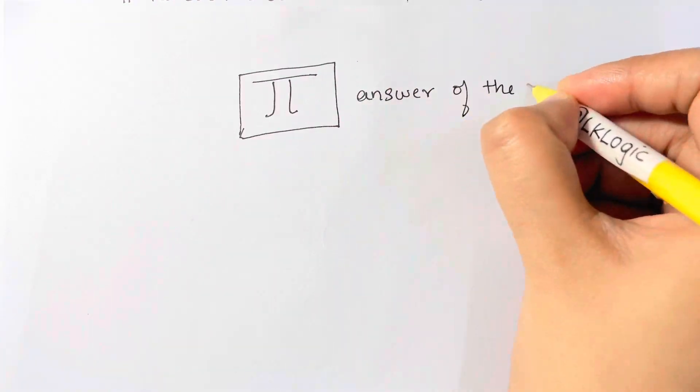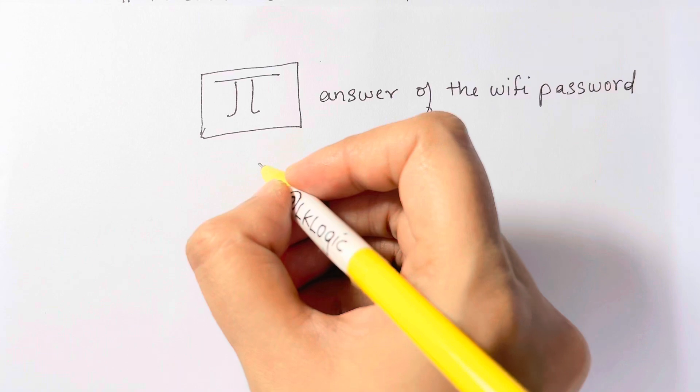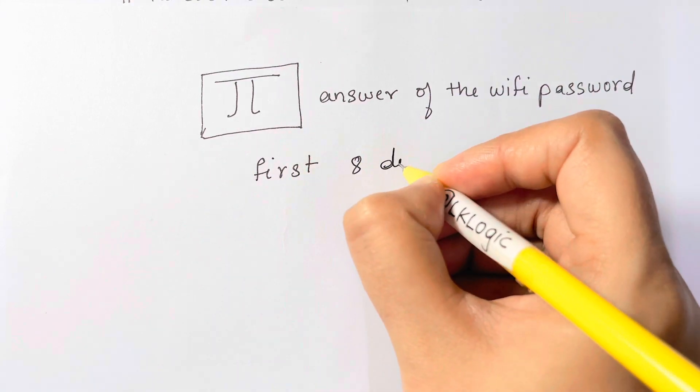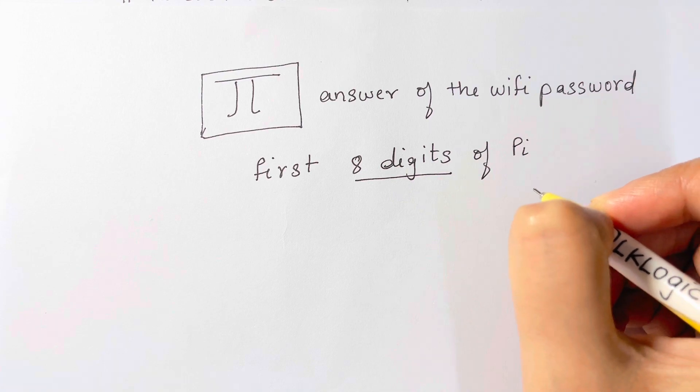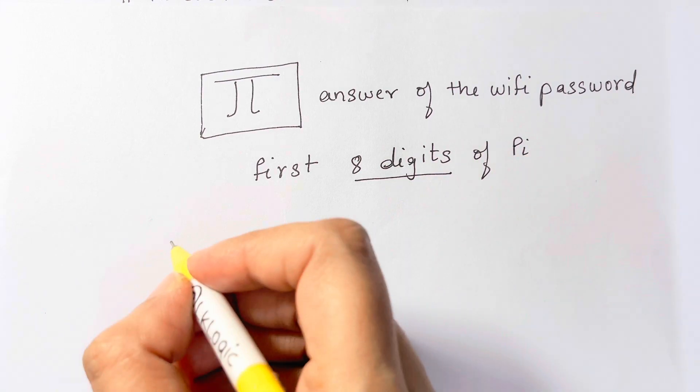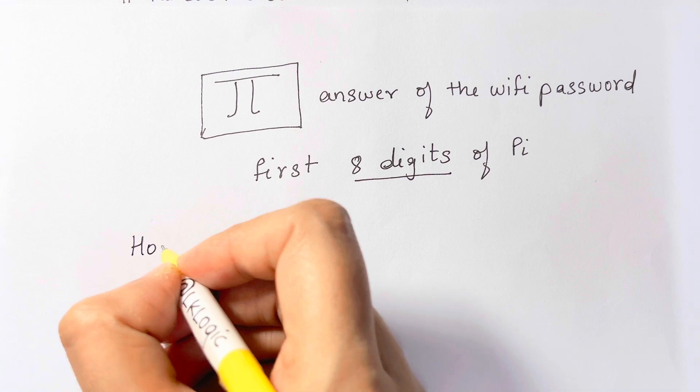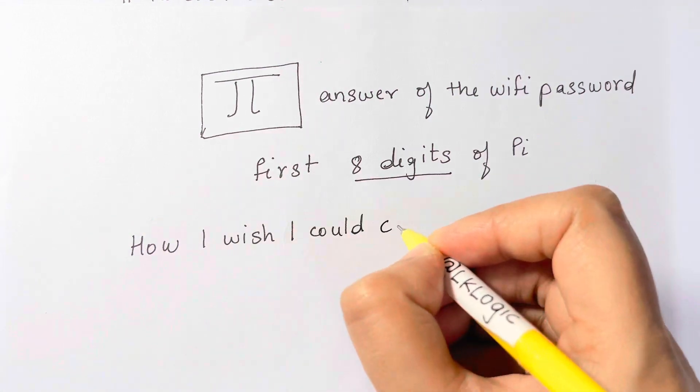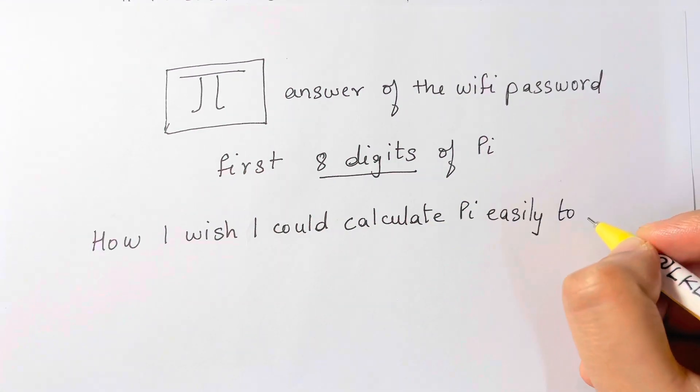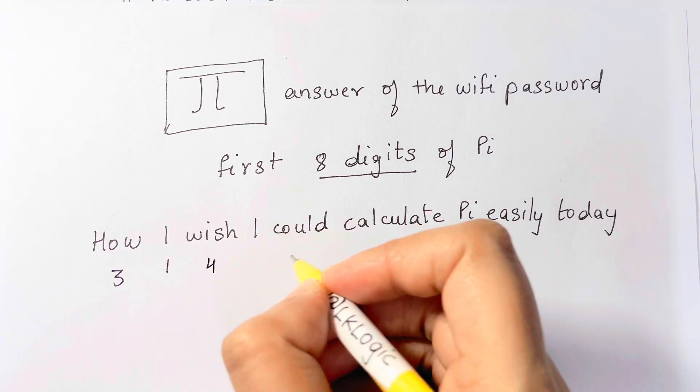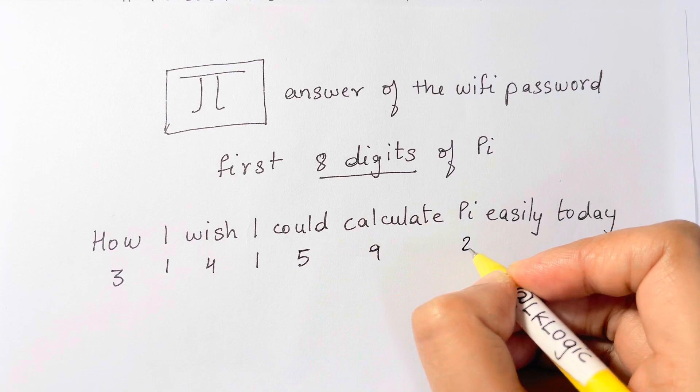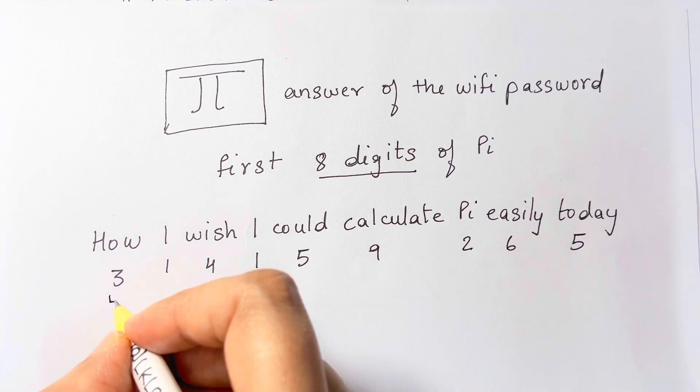So that's the answer: π is the answer of the Wi-Fi password. But to get the Wi-Fi password, we need to know the first eight digits of π. How can you remember that? One method is to memorize a simple sentence and then count the number of letters in each word. The sentence is: 'How I wish I could calculate pi easily today.' Now count the letters in each word: 3, 1, 4, 1, 5, 9, 2, 6, 5. The Wi-Fi password is the first eight digits: that's our answer.